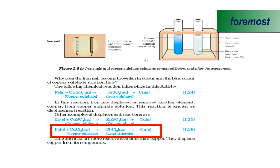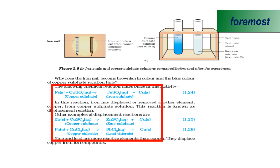Similarly, we have another example — the reaction of lead with copper chloride. Here, lead is more reactive than copper. So, it will replace the position of copper and form lead chloride plus copper. These three are examples of displacement reaction.